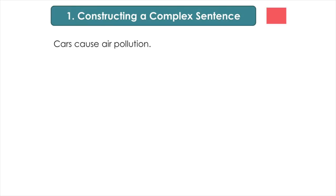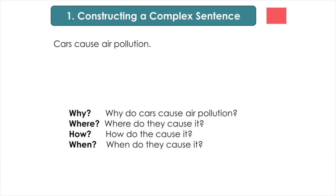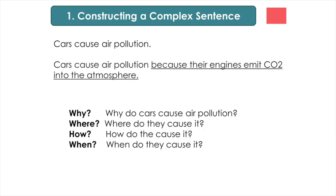Step number one. In order to make the sentence complex, we need to add at least one more sentence into this one. Ask yourself these questions: Why? Why do cars cause air pollution? Where do they cause it? How do they cause it? When do they cause it? I chose the question why. Because their engines emit CO2, or carbon dioxide, into the atmosphere. This is already a complex sentence.